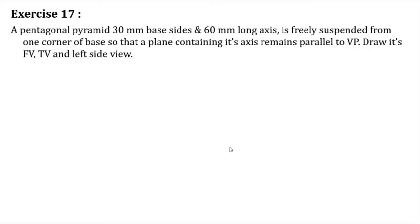When an object is freely suspended, what is the relation between the point of suspension and the center of gravity? The point of suspension and the center of gravity — both will be in the same vertical line. Not the same point, but both will be in the same vertical line.